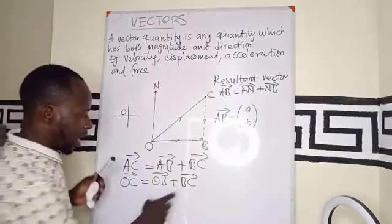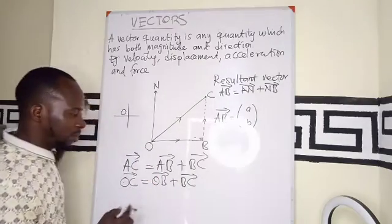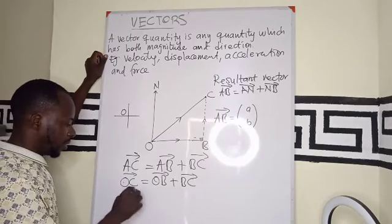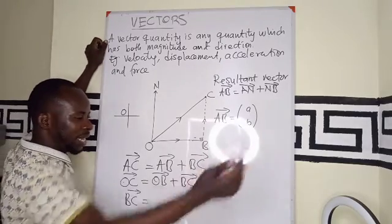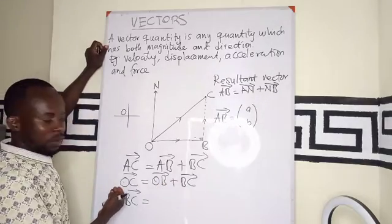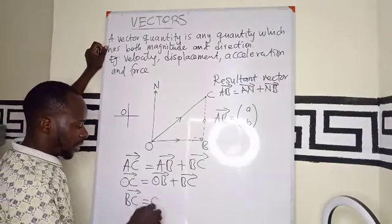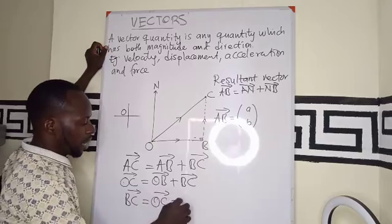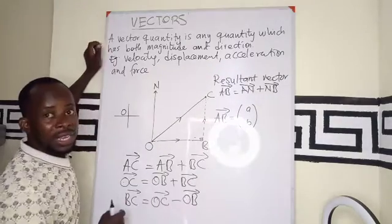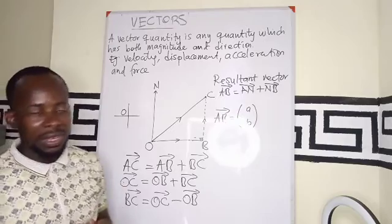Now if I want to make BC the subject, it becomes vector BC which is being maintained at the right, sending OB towards this. So we are going to have vector OC minus vector OB. That is just making the BC the subject.